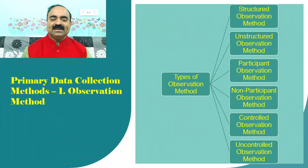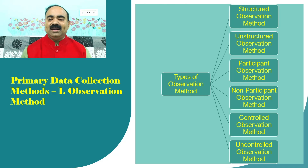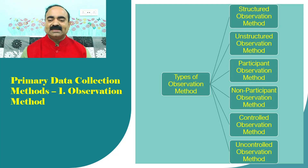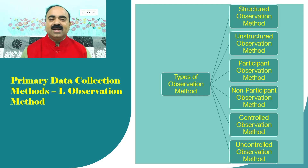Dear students, in this slide I have explained the types of observation method. Observation method can be divided into six types: one, structured observation method; two, unstructured observation method; three, participant observation method; four, non-participant observation method; five, controlled observation method; and six, uncontrolled observation method.